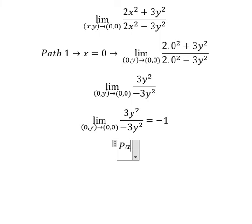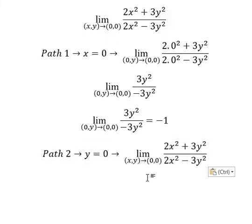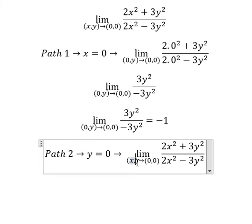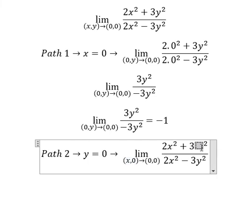For path number two, we have y equals zero. So we have the limit here. Now we change y into zero. We put zero in here, zero in here.